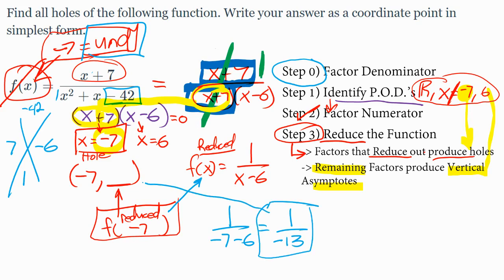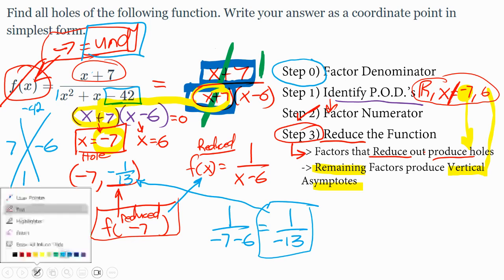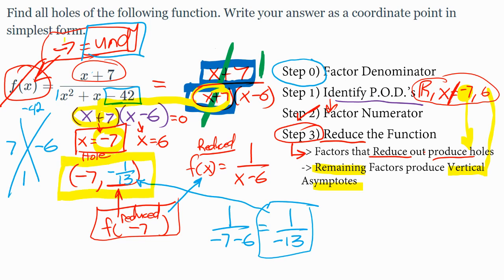So the coordinate value, the answer to where the hole is, is negative 7 comma negative 1/13. And it doesn't matter if you put the negative sign up with the 1 or down by the 13. Either way works. The final answer to this problem is negative 7 comma negative 1/13.